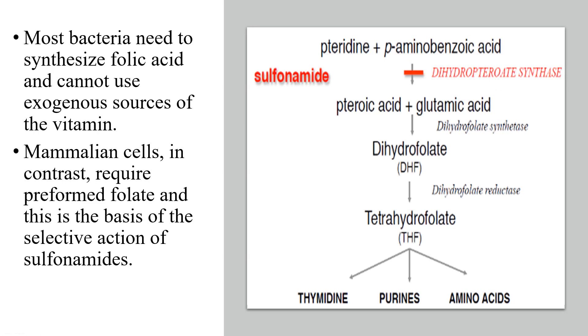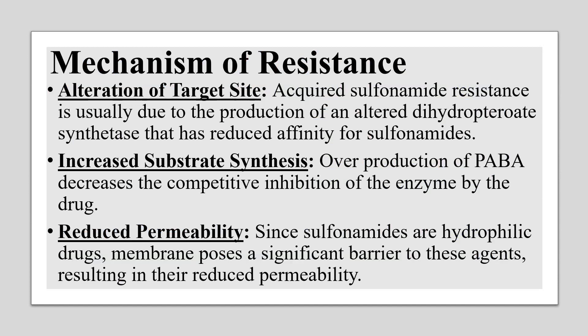Regarding the mechanism of resistance, resistant strains have acquired resistance against sulfa drugs by different mechanisms. The first mechanism is alteration of the target site — the enzyme dihydropteroate synthase. Alteration of this enzyme results in reduced affinity between the drug and the enzyme, so the drug can no longer bind to the target site. As a result, the enzyme remains available to bind with PABA, the reaction proceeds, and the drug becomes inactive.